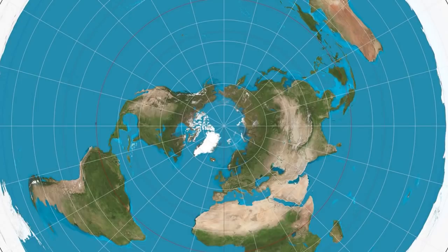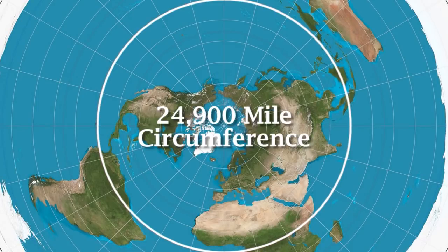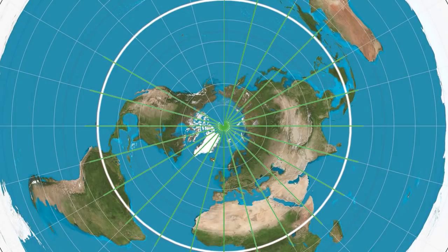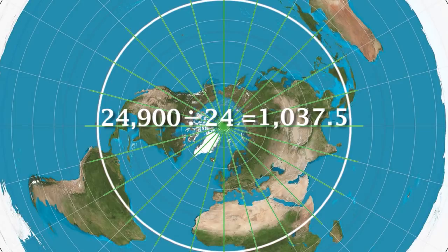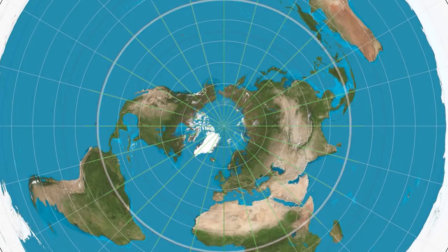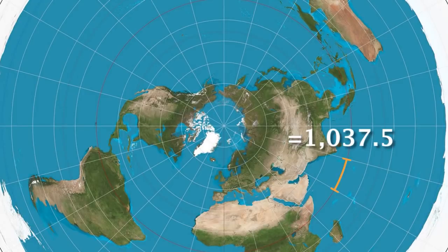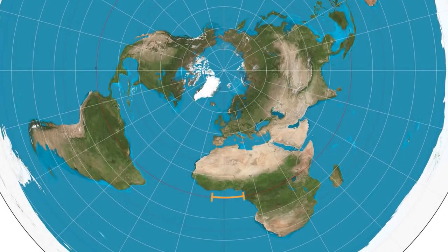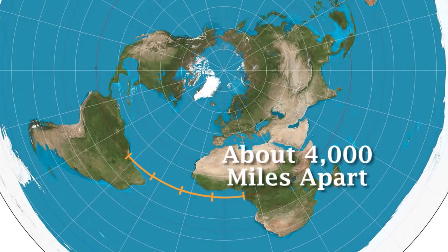The circumference of the Earth at the equator has been measured at 24,900 miles. If you divide that by 24, you get 1,037.5 miles. So every 15 degrees latitude is 1,037.5 miles. So on this map, Africa and South America are about 4,000 miles apart on the equator, which basically matches real-world measurements.